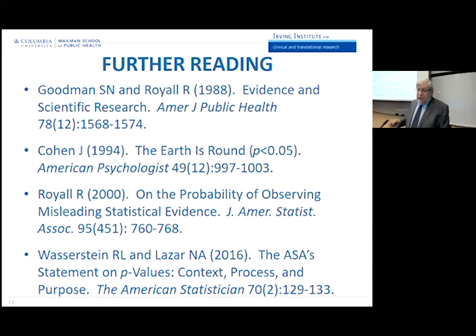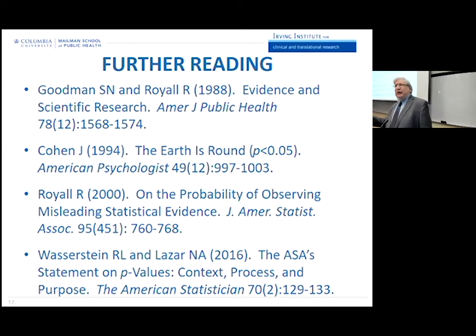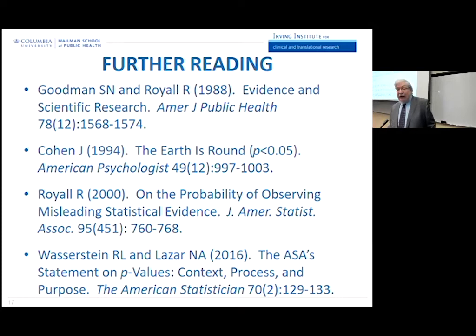Finally, the statement I began my discussion with was published in The American Statistician. It's a position paper — the American Statistical Association statement on p-values: context, process, and purpose. Those not familiar with the American Statistical Association should know they're a very conservative bunch. They don't publish position papers often. This is essentially the first position paper they ever published in their more than 100-year history. So this is what caused the latest round of waves.